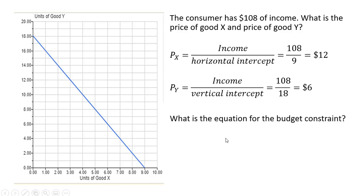What is the equation for the budget constraint? Income equals the price of good X times units of good X plus the price of good Y times units of good Y. We know the income is 108, the price of good X is 12, and the price of good Y is 6. So the equation is 108 = 12X + 6Y.